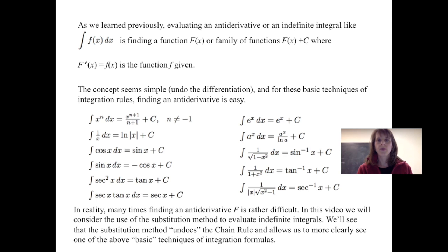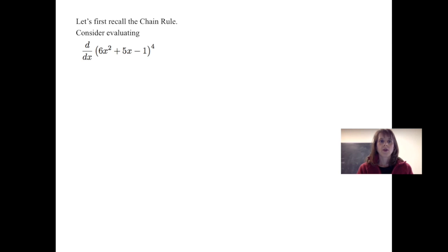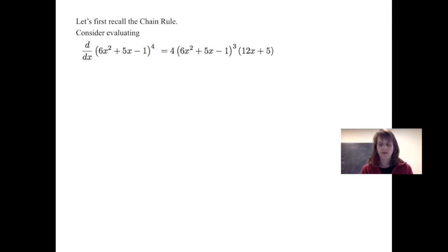So let's quickly review the chain rule. Suppose we want to take the derivative of the quantity 6x squared plus 5x minus 1 raised to the fourth power. We know that the derivative brings that power down: 4 times 6x squared plus 5x minus 1 raised to the third power, and then we take the derivative of what's inside, which is 12x plus 5.